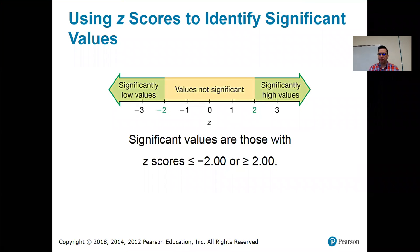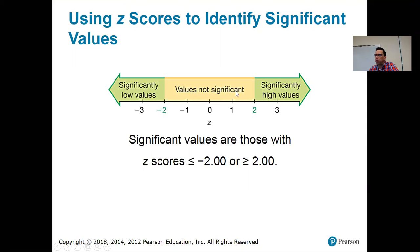Using Z-scores to identify significant values: if the Z-score is less than or equal to negative 2 or greater than or equal to 2, then it is significantly low or significantly high. If it's between negative 2 and 2, it is not an unusual value. In the last example, 1.22 and 1.29 — neither one would be considered extreme. When you take your temperature and it's 99 degrees, you don't panic.